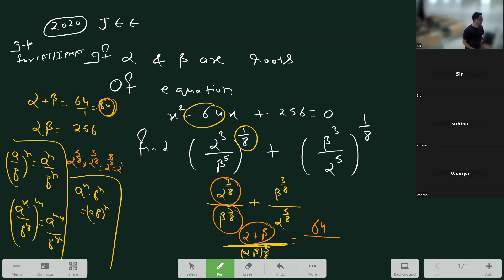What is the product? Yes, 256, which is 2 to the power 8. 2 to the power 8, to the 5 by 8.